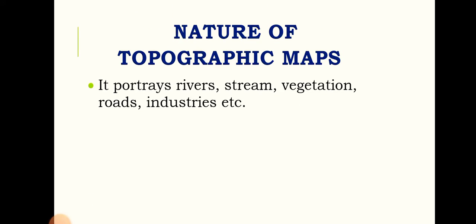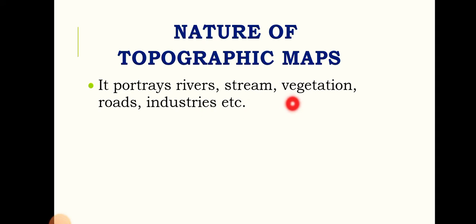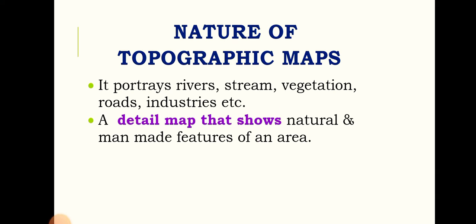The nature of topographic maps: it portrays river, stream, vegetation, road, and industry's man-made features. It is a detailed map that shows the natural and man-made features of an area.